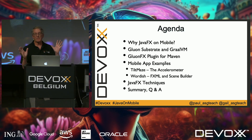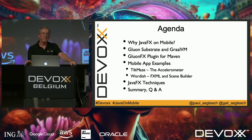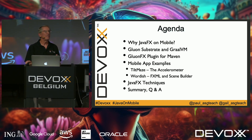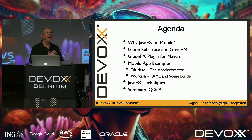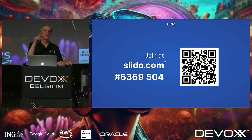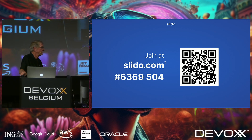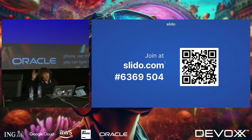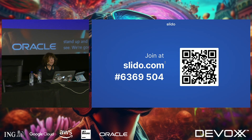We'll show the Wordle demo and discuss SceneBuilder, a nice tool from Gluon, as well as the FXML markup language. We'll walk through various JavaFX techniques used to build the demos. For Q&A, we'll use the Slido tool — scan the QR code with your phone to go directly to the website and submit questions anonymously at any time. We'll address questions at the end and put this slide up again later.